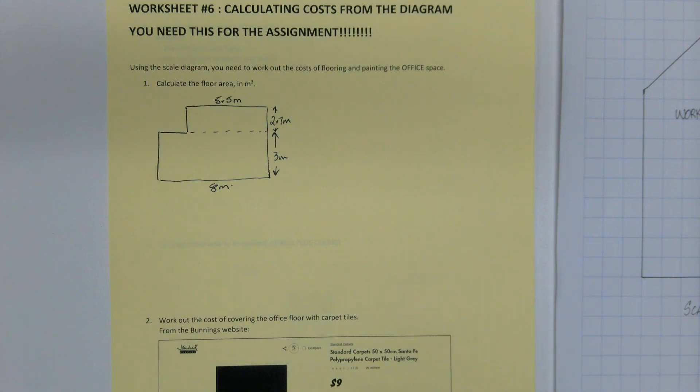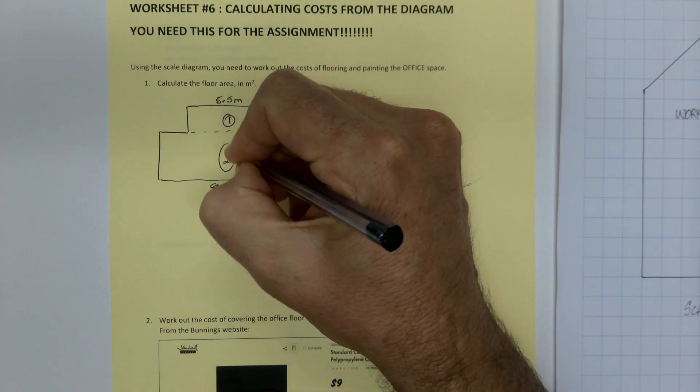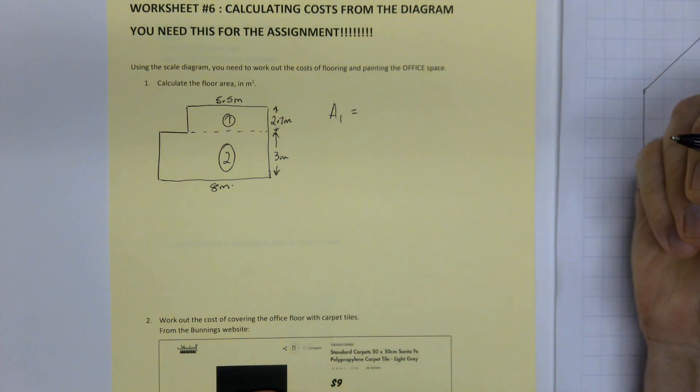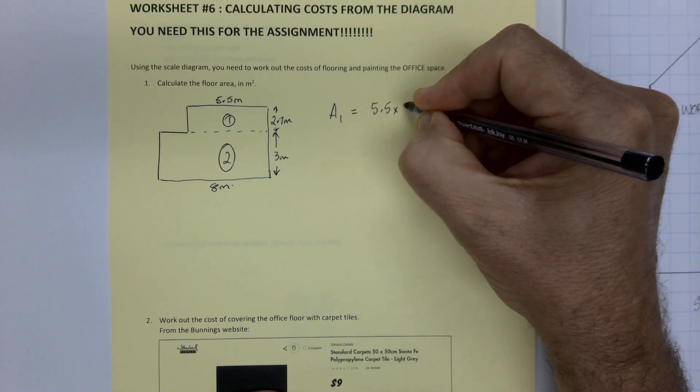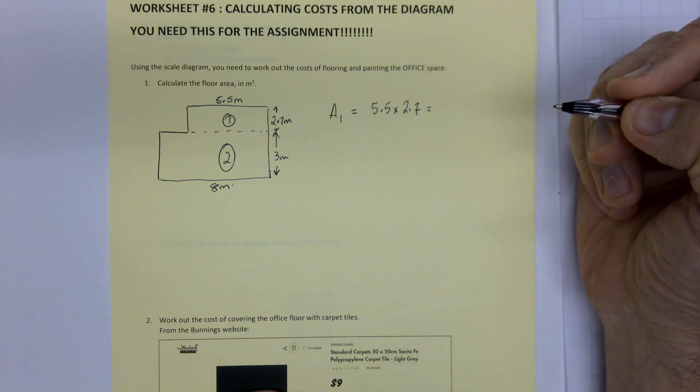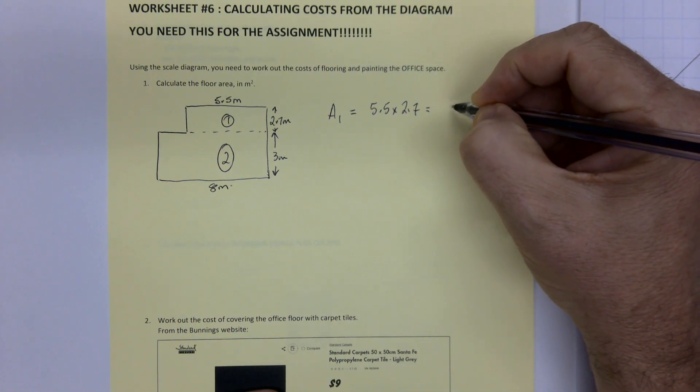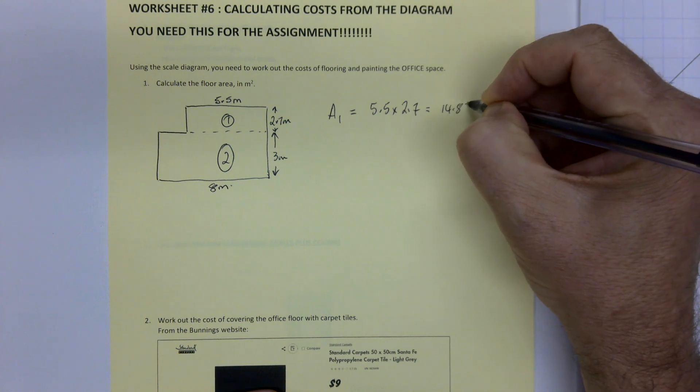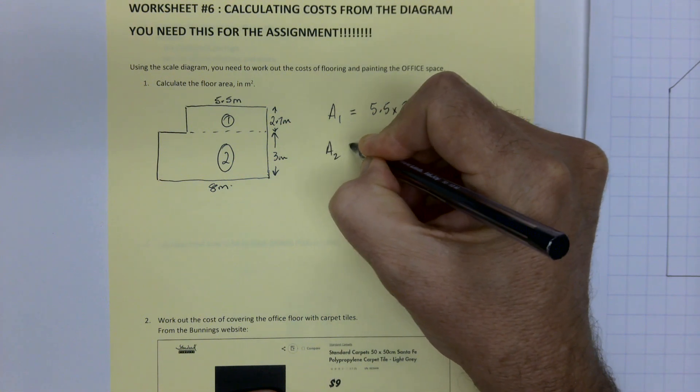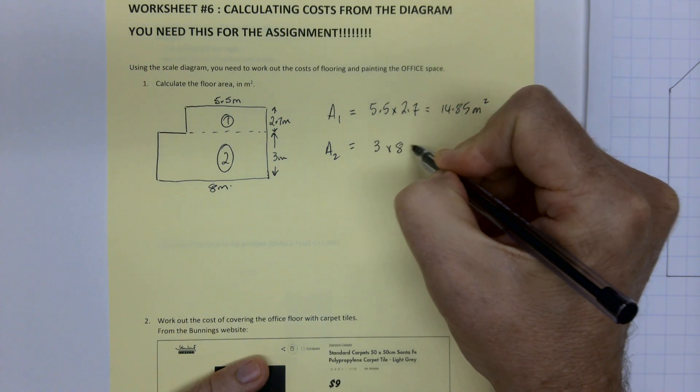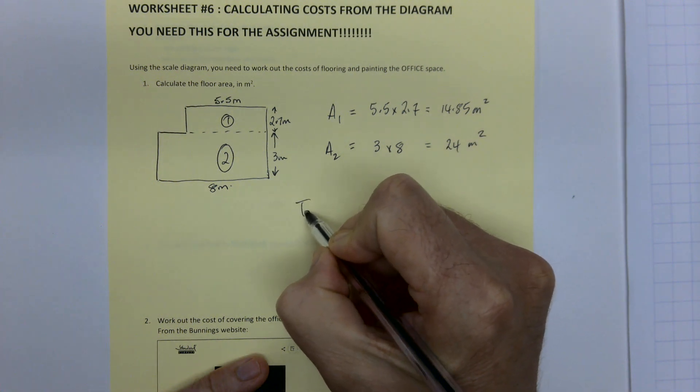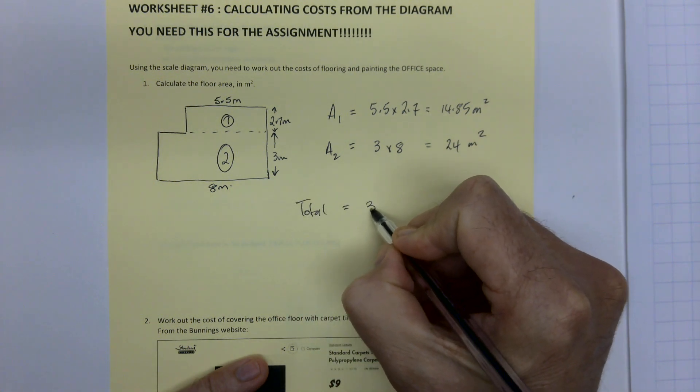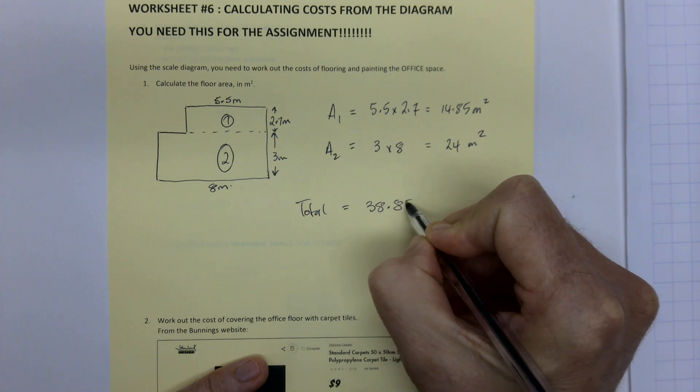So you've got a shape that you need to calculate the area of. This is two shapes here. Area one, and these are just two rectangles, it's a piece of cake. 5.5 times 2.7, which the magic buttons can tell you that is 14.85. Area two, it's three meters by eight meters, which is 24 square meters. And then, so the total is 38.85 square meters.